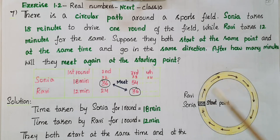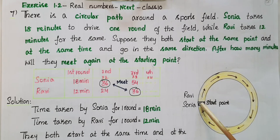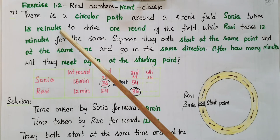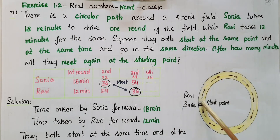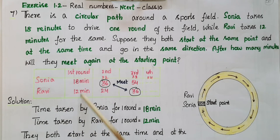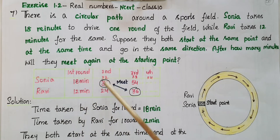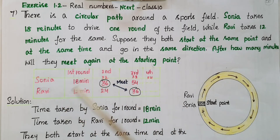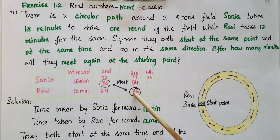Here there is a circular path and Sonia and Ravi start at this point. Sonia takes 18 minutes to complete one round and Ravi takes 12 minutes for the same round. So Ravi is faster than Sonia. From this table, Sonia takes 18 minutes for the first round and Ravi takes 12 minutes. For the second round Sonia takes 36 minutes and Ravi takes 24 minutes. In the third round Sonia takes 54 minutes and Ravi takes 36 minutes. So they both meet at 36 minutes.